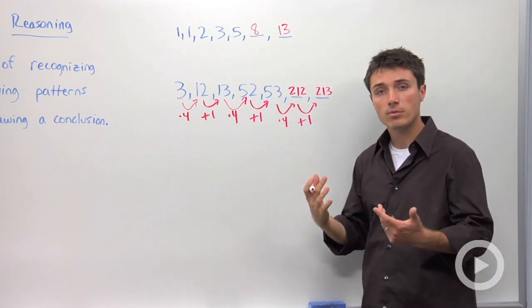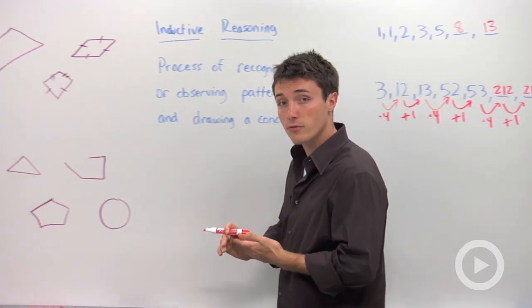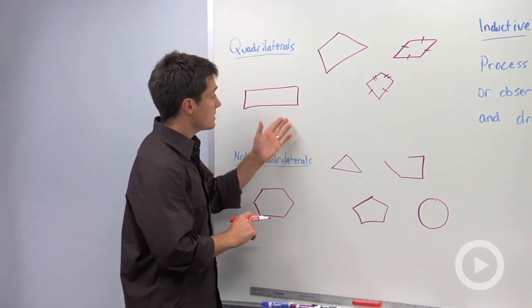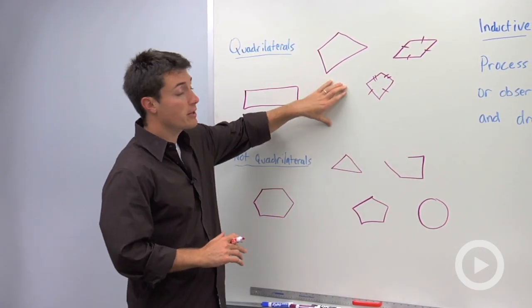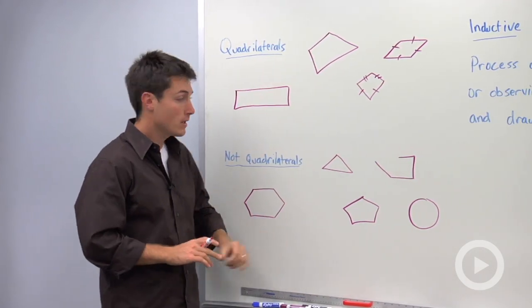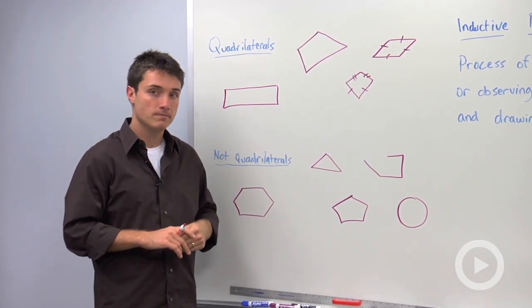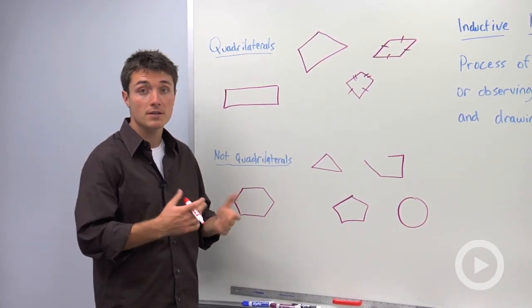Now how does this apply to geometry? Well we can use inductive reasoning to identify definitions. So let's say here I told you these shapes were quadrilaterals and these shapes are not quadrilaterals. Come up with a definition. All you're going to use here is inductive reasoning.